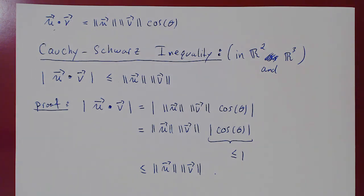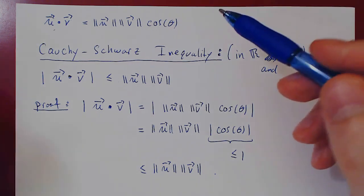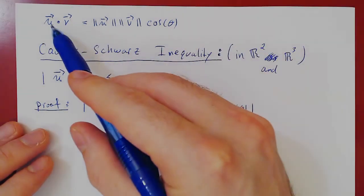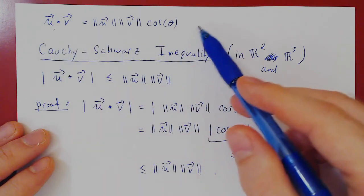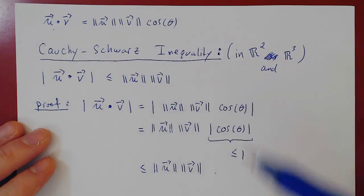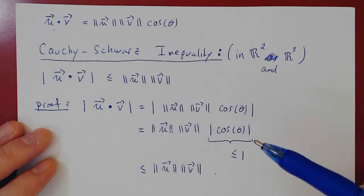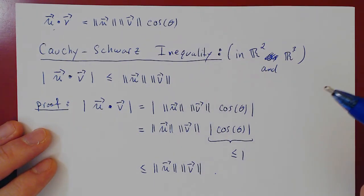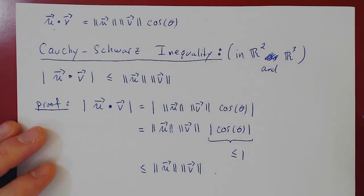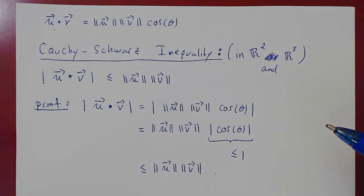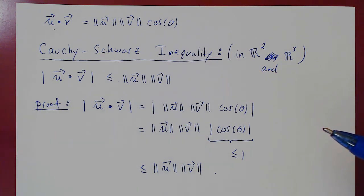In our next video we are going to consider an application of the dot product, keeping in mind that two vectors are perpendicular if and only if they have a zero dot product, and we'll apply this notion of orthogonality to problems of distances.